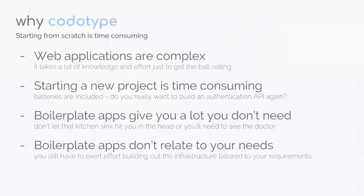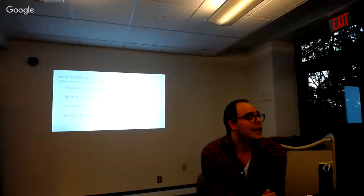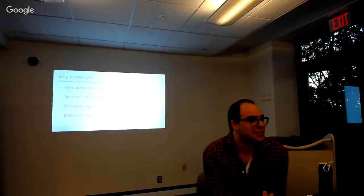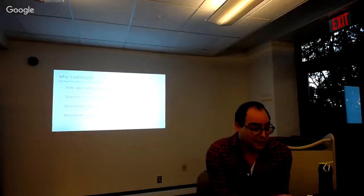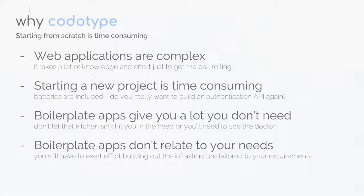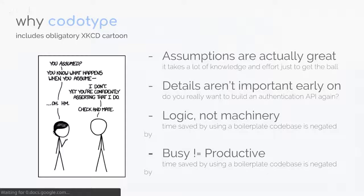One of the goals of Codotype is to drive down the time it takes to go from idea to functional prototype. Another problem it addresses is boilerplate apps — they're widely available, kind of like the kitchen sink. A boilerplate app gives you user authentication, user role management, permissions, and authorization — all the things you need. But the problem is it usually gives you a lot of things you don't actually want. You fork a good app and then spend hours deleting things you don't need.